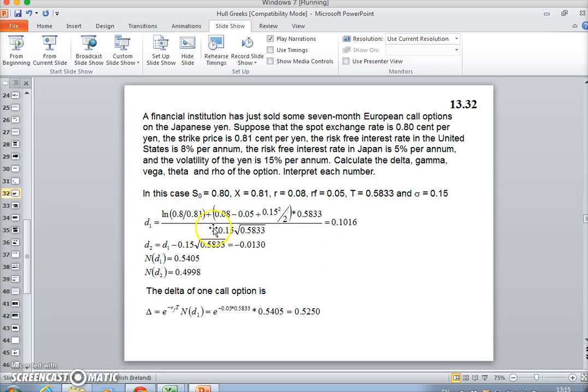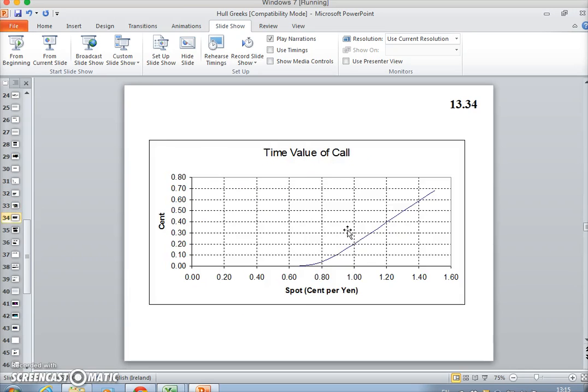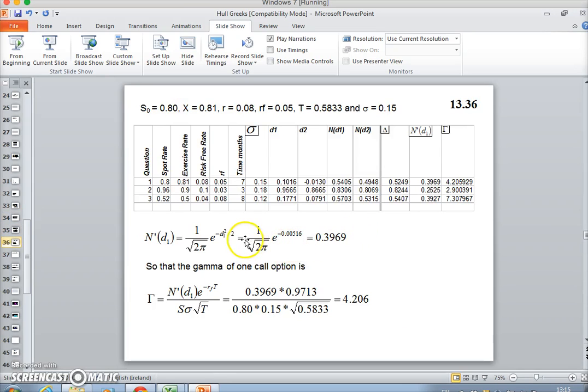We square it, we divide it by 2, and we take the negative, and that gives us 0.3969. Then to estimate gamma, gamma here is N—the probability density function—multiplied by the exponential r_f times T, and then the value of the underlying asset, the sigma, square root of T. So we have 4.2.